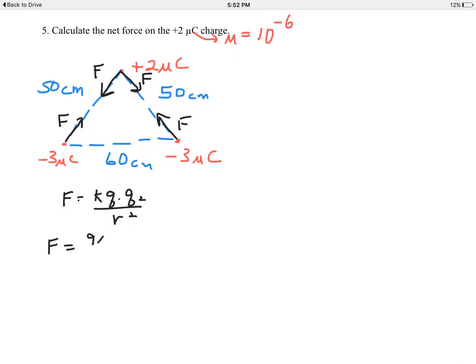So F equals nine times ten to the ninth times two microcoulombs. I'll put the micro there—that means ten to the negative six when you put that in your calculator—times three microcoulombs.